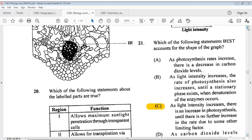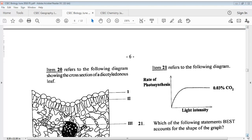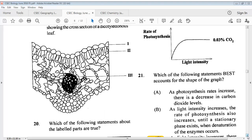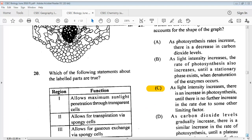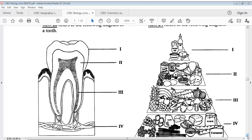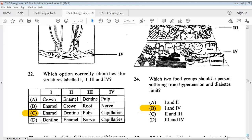For question 21, here we have another diagram. It shows us the rate of photosynthesis and the light intensity. It says which of the following statements best accounts for the shape of the graph? The answer is C. As light intensity increases, there is an increase in photosynthesis until there is no further increase in the rate due to some other limiting factor. For question 22, we have a diagram of a tooth and four parts are there. It says which option correctly identifies the structures labeled 1, 2, 3, and 4? We know that is C.